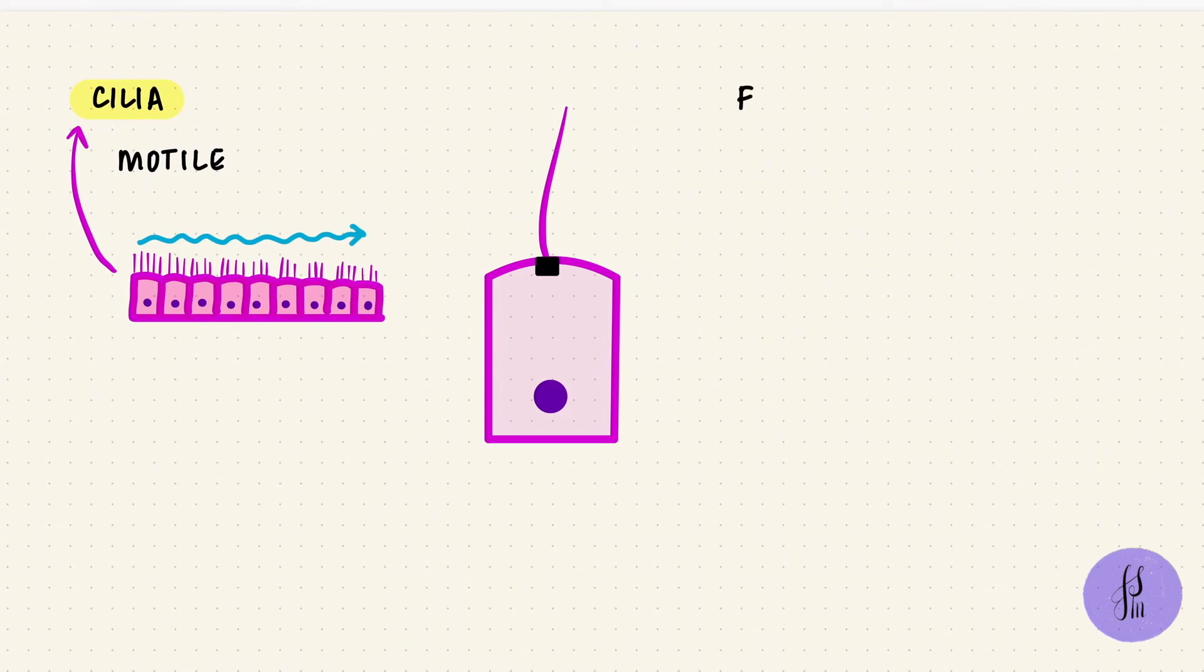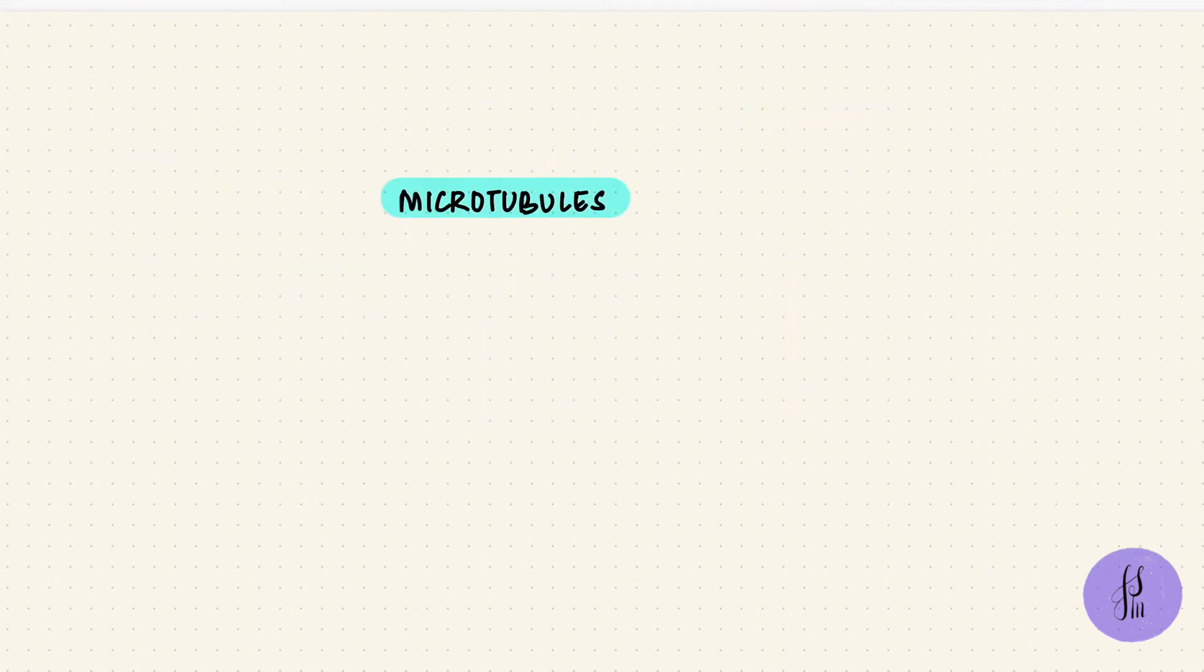What's a structure that's very similar to cilia? Flagella. They too have microtubules, but the only flagellated cell in humans is the sperm cell. Again, they help with motility. So microtubules are a part of cilia, flagella, and we also saw how they're important for cell division.